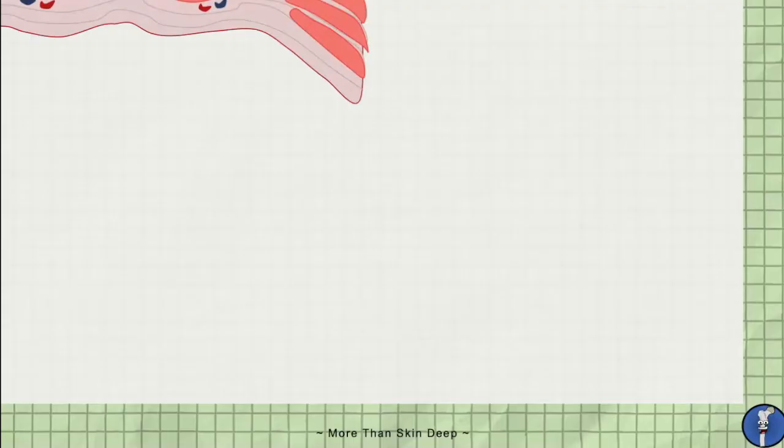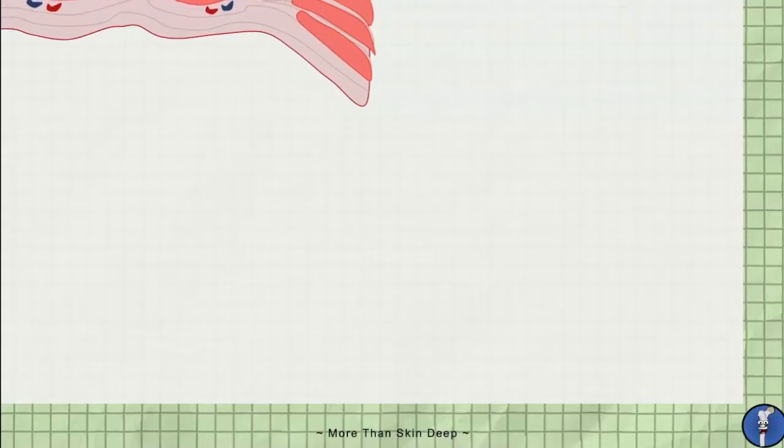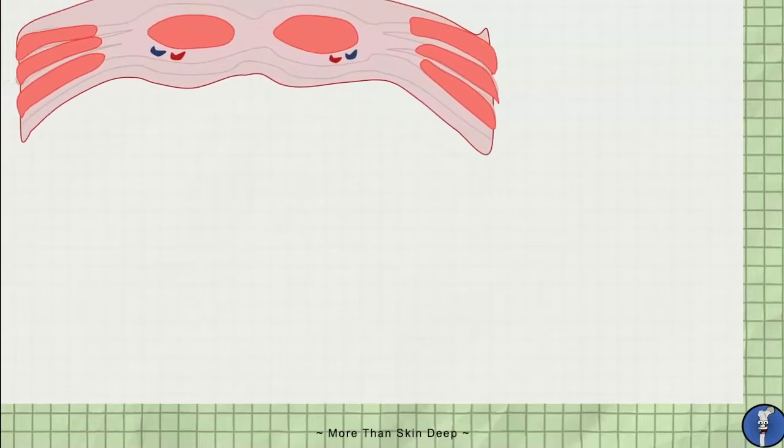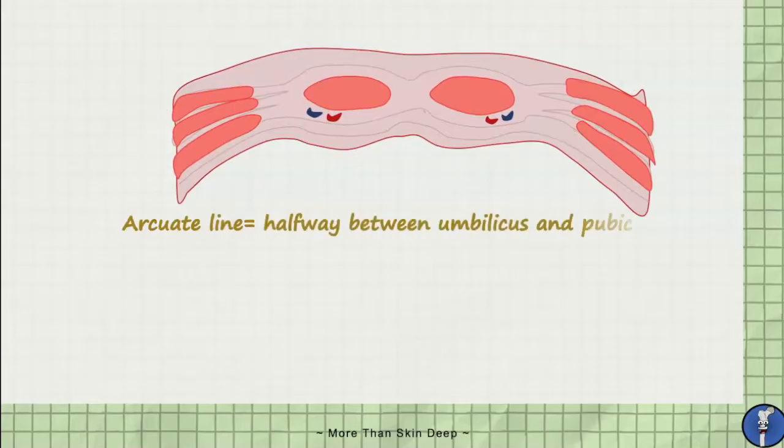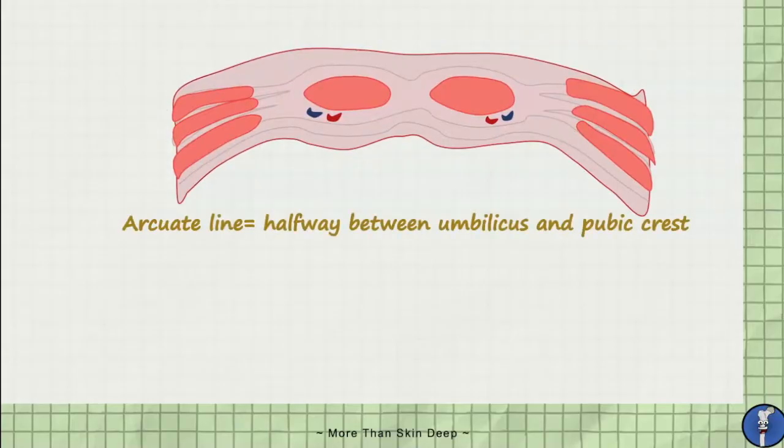This anatomy outlines the anterolateral abdominal wall, but cesareans are often mainly cutting through the midline, where the rectus abdominis lies. In this part of the abdomen, the anatomy changes at a crucial plane known as the arcuate line, which lies about halfway between the umbilicus and the pubic crest.